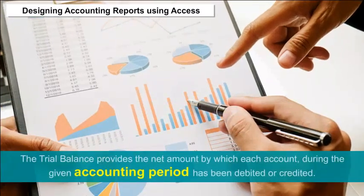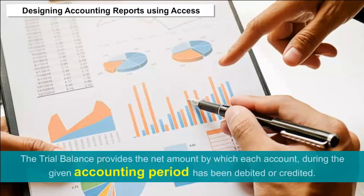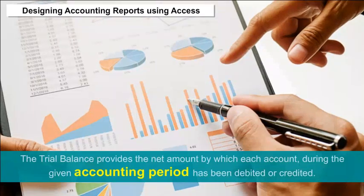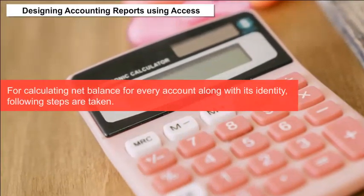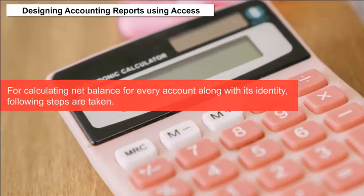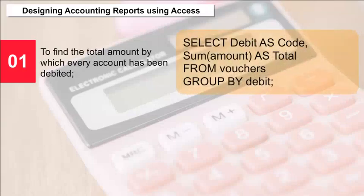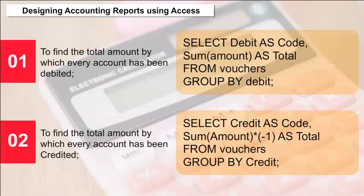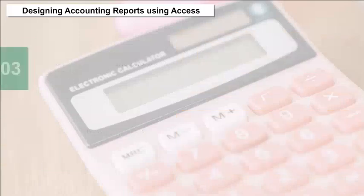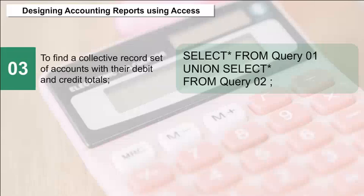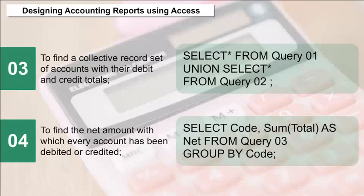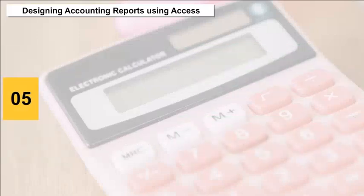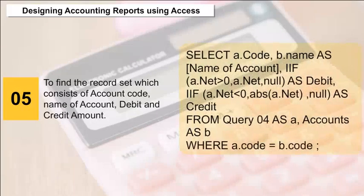Designing Accounting Reports — Trial Balance: The trial balance provides the net amount by which each account has been debited or credited during the given accounting period. For calculating the net balance for every account, the following steps are taken: 1. Find the total amount by which every account has been debited. 2. Find the total amount by which every account has been credited. 3. Find a collective record set of accounts with their debit and credit totals. 4. Find the net amount with which every account has been debited or credited. 5. Find the record set consisting of account code, name of account, and debit and credit amounts.